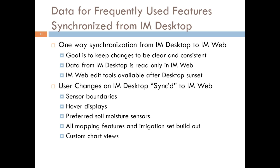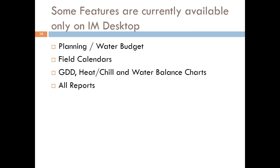When IAM Desktop is sunsetted, the edit tools will be available in IAM Web and that will be your main interface. Things that sync from IAM Desktop to IAM Web include sensor boundaries, hover display settings, preferred soil moisture sensors, custom chart views, and any fields or sets you build. Features currently only on IAM Desktop — planning, water budgeting, field calendars, GDD, heat, chill, water balance charts, and reports — will all be migrating to IAM Web over the coming year.